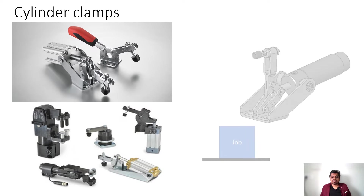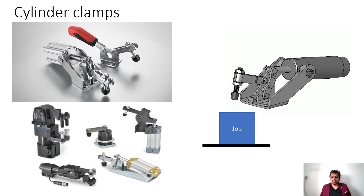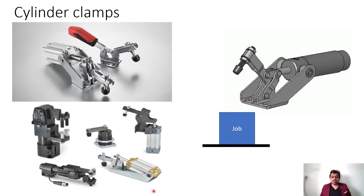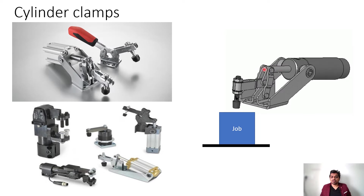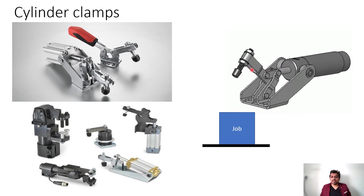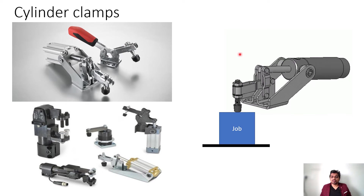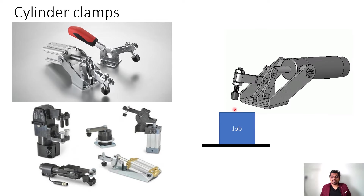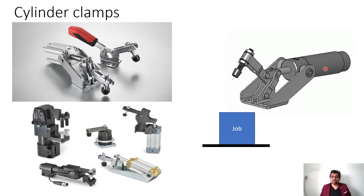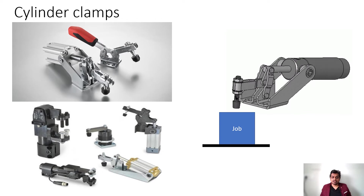This is essentially a cylinder clamp. You can see the movement of the piston is causing the action of this swing clamp — this is the swing arm of the toggle clamp — and it is applying force on the jaw which is getting clamped. These are the cylinder clamps.